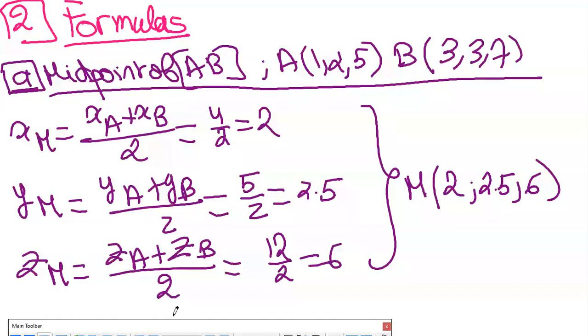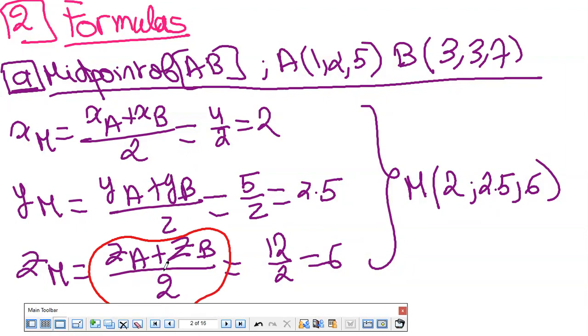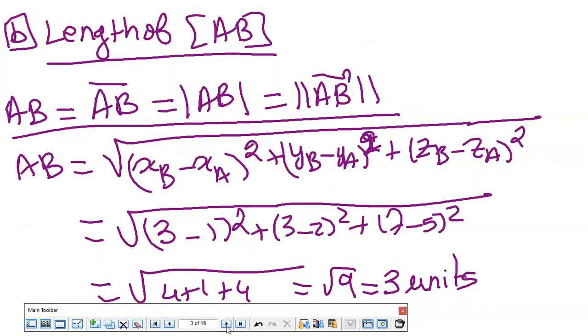Now let's move to some formulas. The midpoint formula is exactly the same as in 2D, but you have the z extra. If I have A(1,2,5) and B(3,3,7), what are the coordinates of the midpoint? X of A plus X of B over 2, Y of A plus Y of B over 2, and Z of A plus Z of B over 2. We just have the z that we added for 3D.